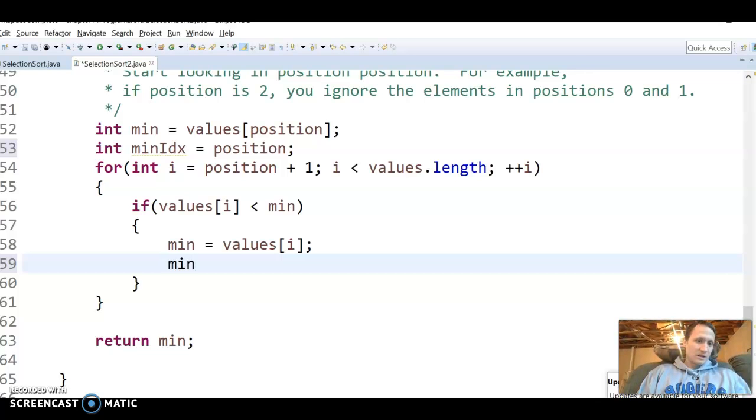So our min index becomes the position we're on, which is i. We're looping through and checking values position i, so that one's less than our min, so that becomes the min index. And then we should return the min index, not the min value.